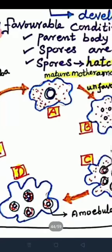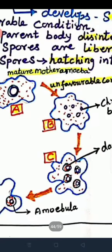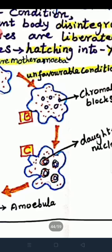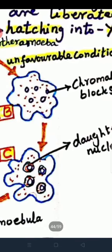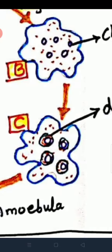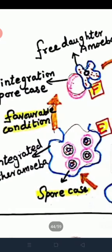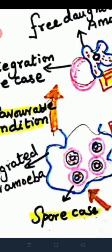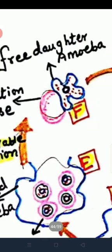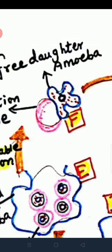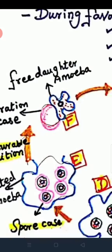At the time of unfavorable conditions, the mature parental amoeba nucleus breaks into chromatin blocks. Those chromatin blocks are surrounded by a nuclear membrane and then by cytoplasm, then develop into a spore case. When conditions become favorable, the parental body gets disintegrated and liberates free spores, which each grow into a young amoeba.